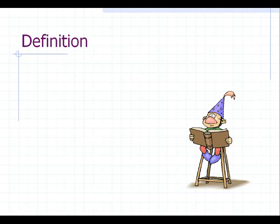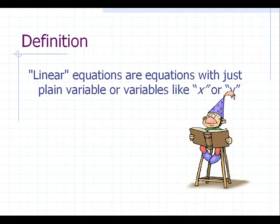A linear equation is an equation in which the highest degree of the variables is 1. In other words, such equations have plain variable or variables like x or y.